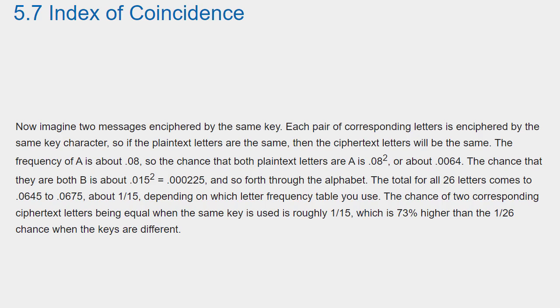The frequency of A is about .08, so the chance that both plaintext letters are A is .08 to the power 2, or about .0064. The chance that they are both B is about .015 to the power 2, equals .000225, and so forth throughout the alphabet. The total for all 26 letters comes to .0645 to .0675, about 1/15.